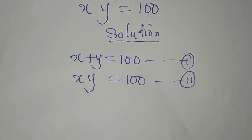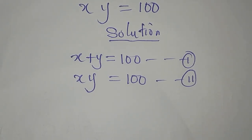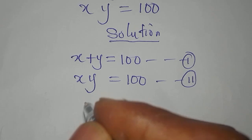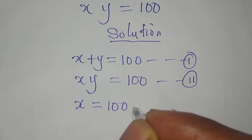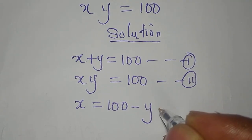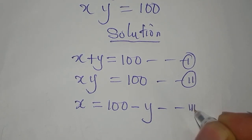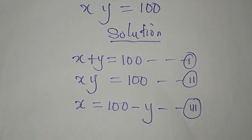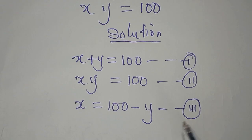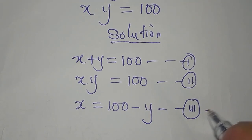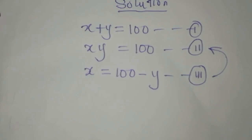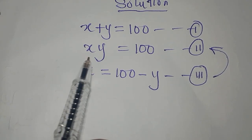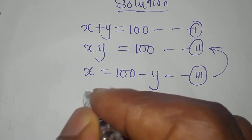From equation 1, we are expected to make x the subject, so that x will be equal to 100 minus y. Let's call this equation 3. Remember, equation 1 gave birth to equation 3. So we put equation 3 back into equation 2.